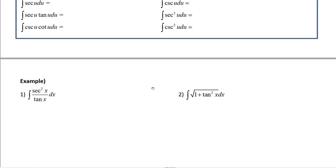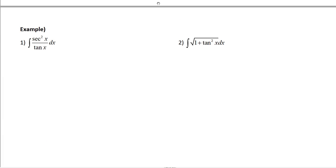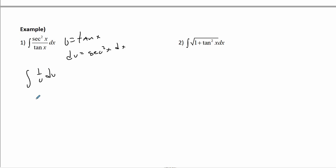For this example, I'm going to make u equal to tangent x, so du equals secant squared x dx. The secant squareds cancel, giving the integral of 1 over u du, which is just the ln of the absolute value of tangent of x plus some c. Pretty easy.